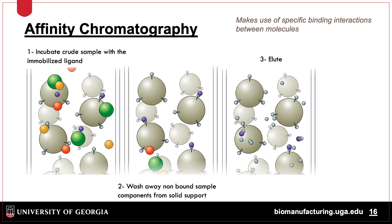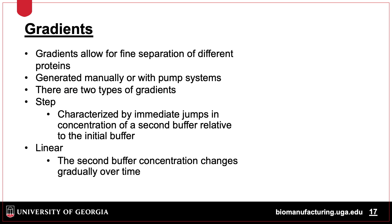Affinity chromatography takes advantage of a natural property of the protein or a tag to bind to a ligand attached to the resin. In the example, one protein has the tag while all other proteins do not. The tagged protein binds to the column and the other proteins are washed away. Finally, the tagged protein is eluted from the resin by using a chemical that outcompetes the protein for binding to the resin. For elution, an elution buffer is employed.